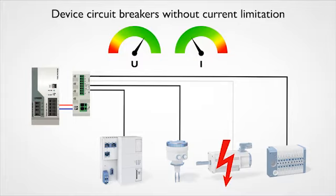In the event of an error, device circuit breakers without current limitation allow the maximum current of the power supply to flow, just like a mechanical circuit breaker or a typical fuse.